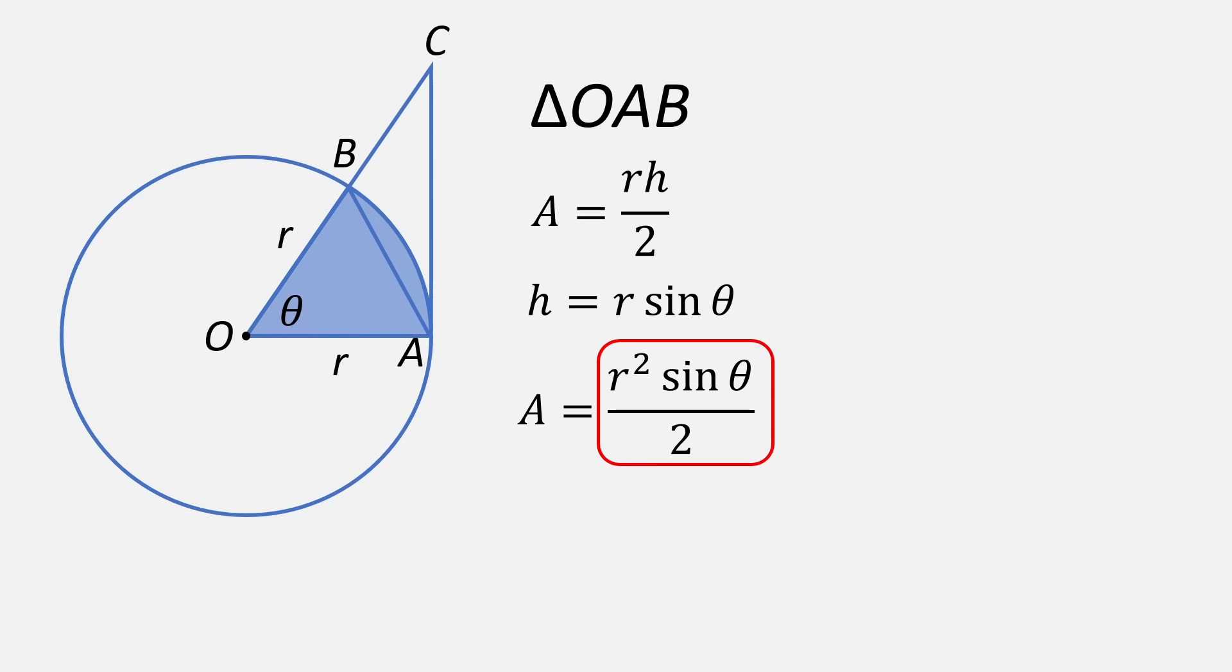Next is the area of the sector O, A, B. Its area is just a textbook formula, R squared theta over 2.